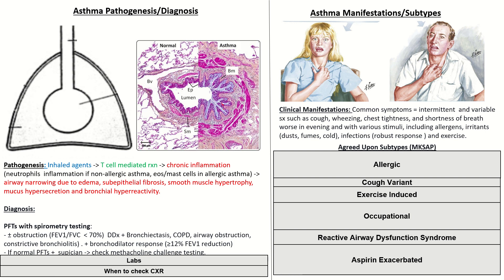The old-school classification divided asthma into two types: extrinsic (allergic) asthma — typically a young atopic patient, possibly with atopic dermatitis or allergic sinus disease — and intrinsic asthma. Intrinsic asthma is worth remembering because some patients, especially adults, don't fit the extrinsic category. Adult-onset asthma is less likely to involve eosinophilic inflammation and more likely neutrophilic, with increased concordance with severe obesity and sometimes less steroid-responsive.